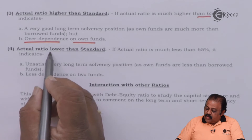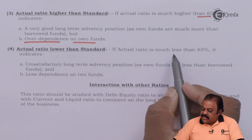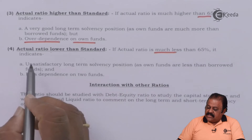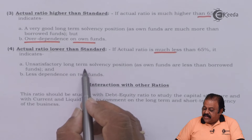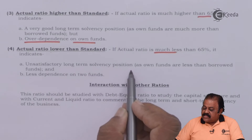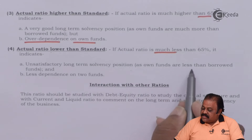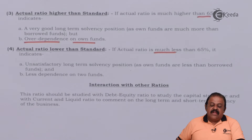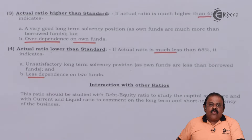If the actual ratio is much less than 65 percent, it indicates an unsatisfactory long-term solvency position, as own funds are less than the borrowed fund and there is less dependence on own funds.